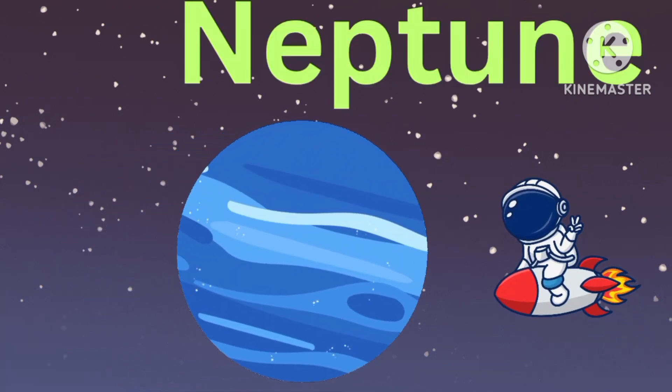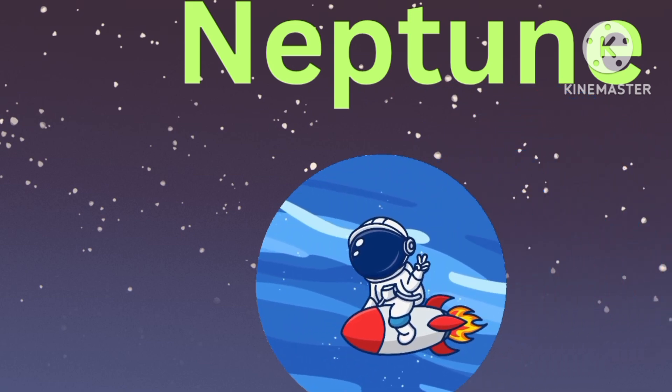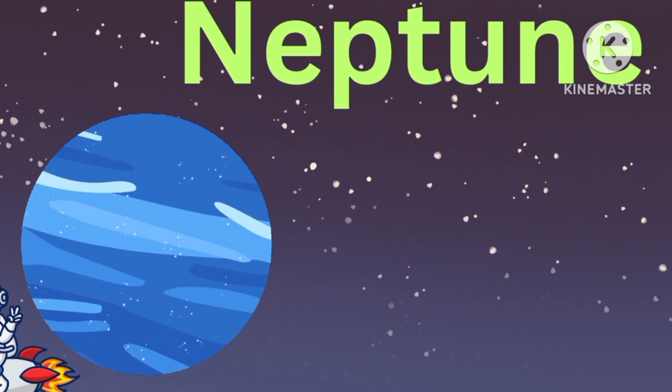Neptune is the eighth planet from the sun. It is the fourth largest planet in the solar system.